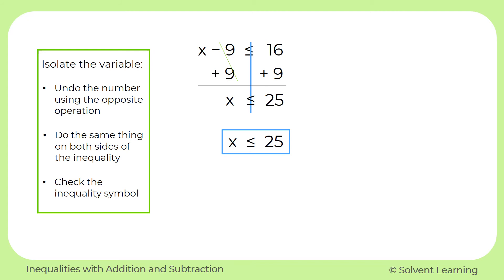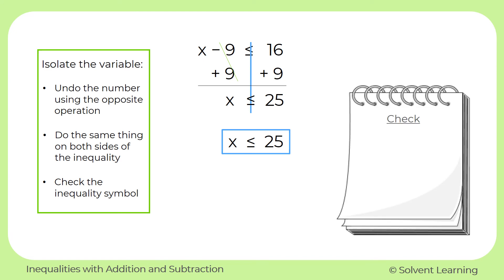And this is saying that x can be any number that's less than 25. It could be 10. It could be 0. It could be a negative number. But it can also be equal to 25 as well. So let's do a check to make sure that that symbol does work for this problem.